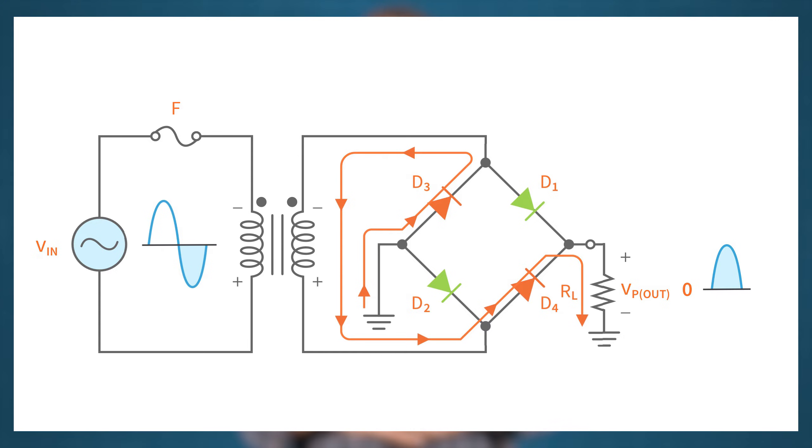During the negative half-cycle, from the positive side of the secondary winding, the current flows through D4 and enters the load. Notice that the direction of the current when it enters the load is the same as during the positive half-cycle. So the output voltage across the load is still in the same direction, though the input voltage is negative.